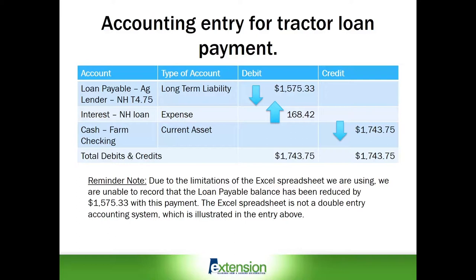In line three, the amount of the total check, $1,743.75, reduces cash on hand, which is a current asset of the farm, with a credit entry. As a reminder, due to the limitations of the Excel spreadsheet we are using, we are unable to track the current loan principal balance after this payment. Like all accounting entries, debit and credit entries must be in balance. In this example, total debits and credits are $1,743.75.